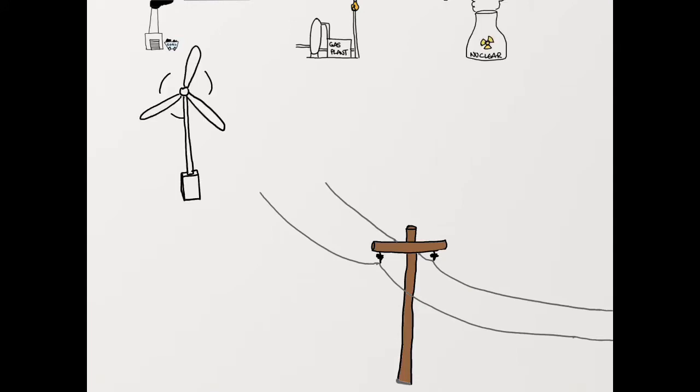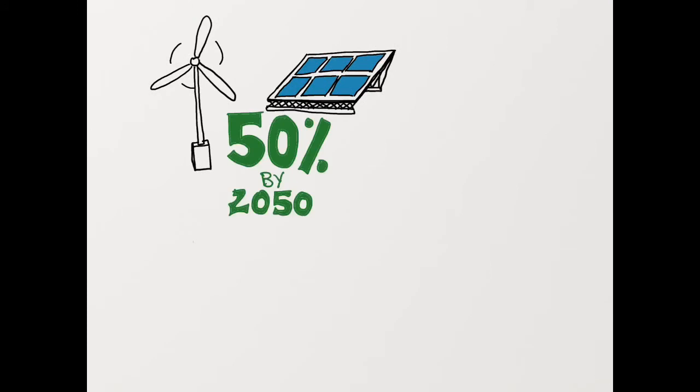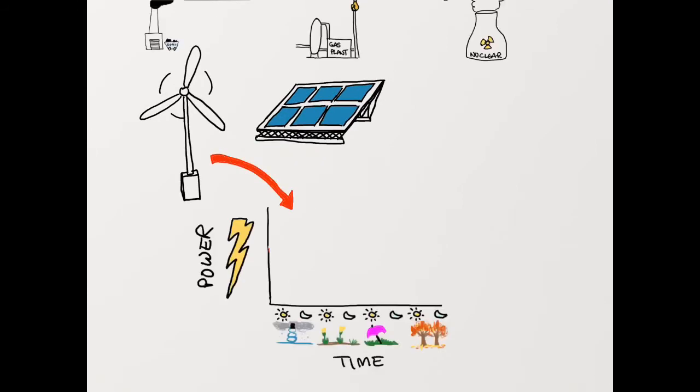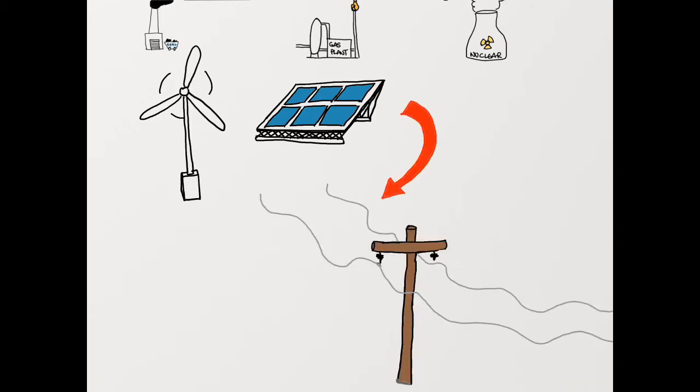By 2050, solar and wind will account for 50% of generation. These sources are cyclical. The amount of wind and sun changes from day to night and between each season. Fed into our current system, this would result in cyclical power for end users if we don't do something to smooth out the power supply.